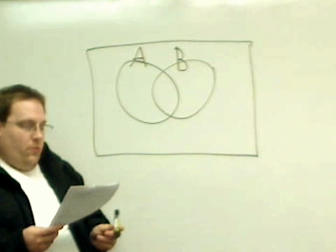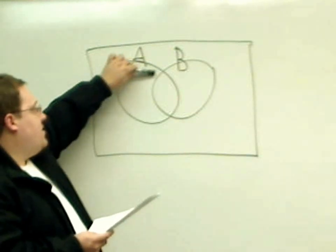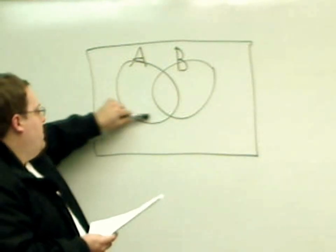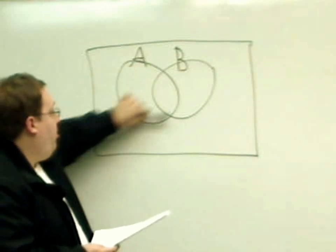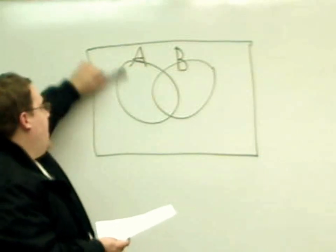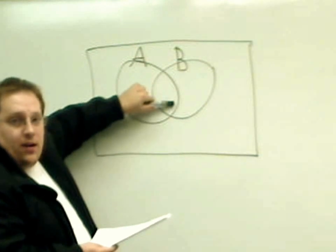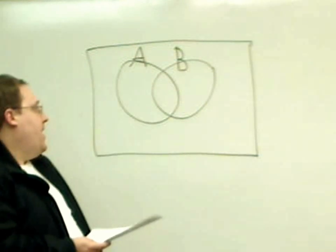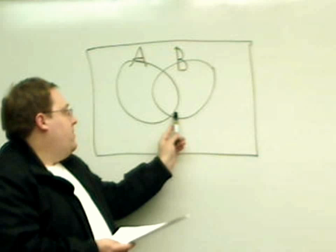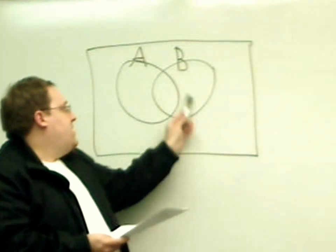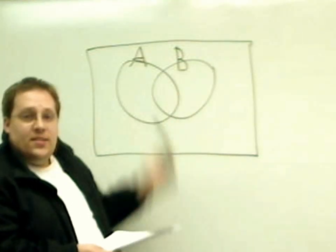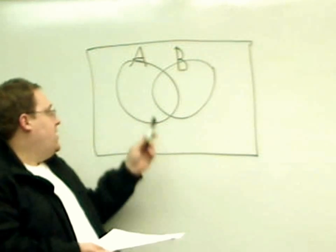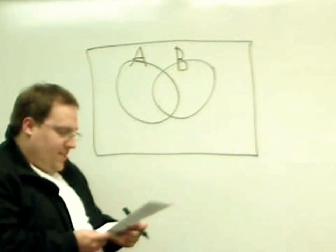Realize that set A is not just this piece of the circle. It's the whole thing. Set A represents everything in here and everything in here. That's all of set A. Set B is the same way. B has all the elements inside of here and all the elements inside of here. They get represented in both sets here in the middle.